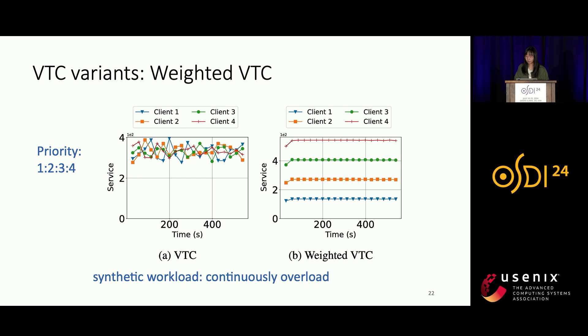We also investigated VTC variants. Weighted VTC maintains fairness when clients have different priorities. For a workload of four continuously overloaded clients, standard VTC treats each client the same and they receive equal service. Weighted VTC assigns priorities 1, 2, 3, and 4 to the four clients respectively, and it maintains the service ratio of 1:2:3:4 as desired. This is achieved simply by updating the counter divided by the priority.